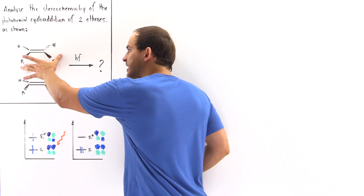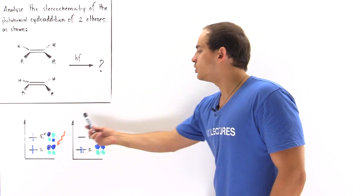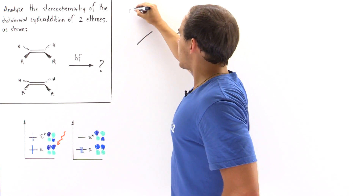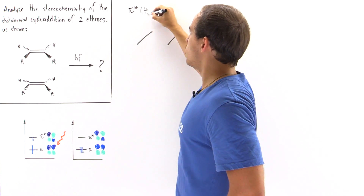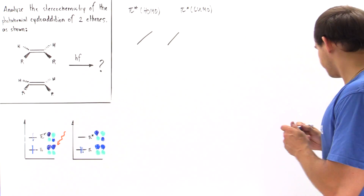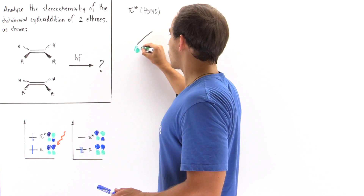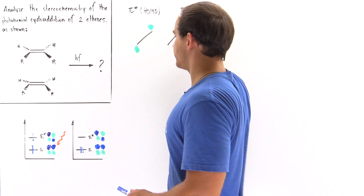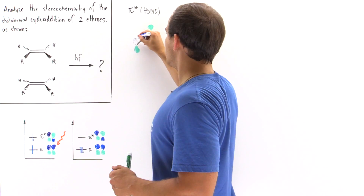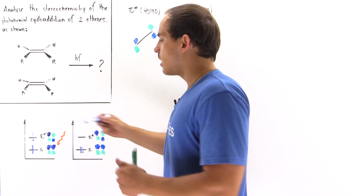So molecule one combines with molecule two, meaning the HOMO of molecule one combines with the LUMO of molecule two. Let's draw that using orbital notation. We have pi star as the HOMO of molecule one combined with pi star as the LUMO of molecule two. These two molecular orbitals are exactly the same but found on different molecules — one of them is empty and the other has an electron.